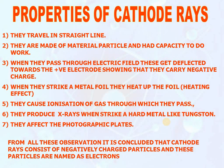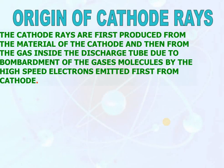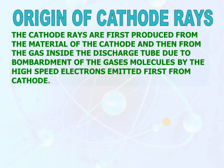From all these observations, it is concluded that cathode rays consist of negatively charged particles, and these particles are named as electrons by J.J. Thomson. The cathode rays are first produced from the material of the cathode and then from the gas inside the discharge tube, due to bombardment of the gas molecules by the high-speed electrons emitted first from the cathode.